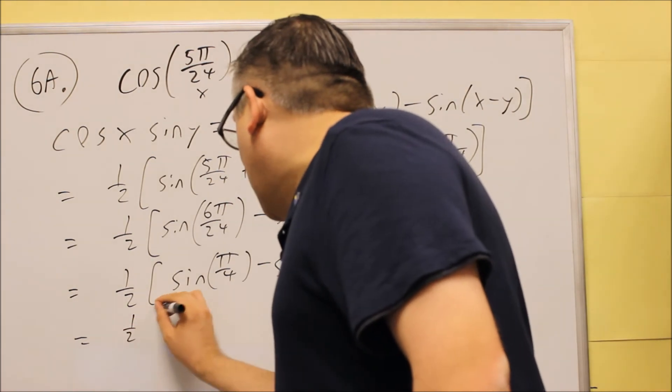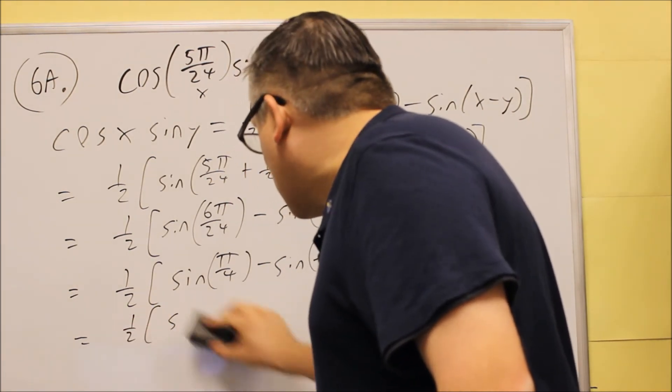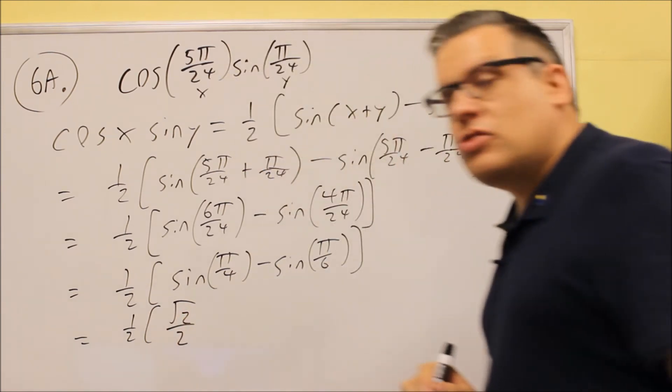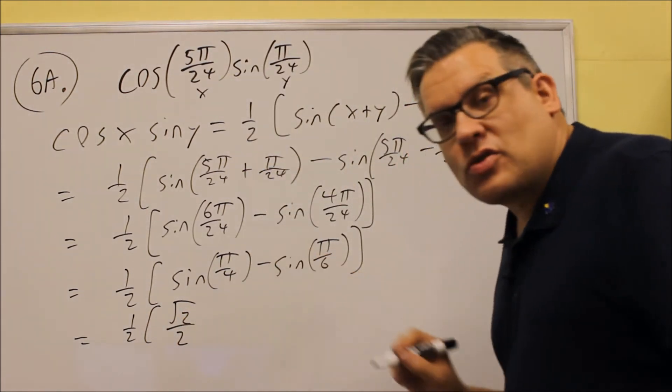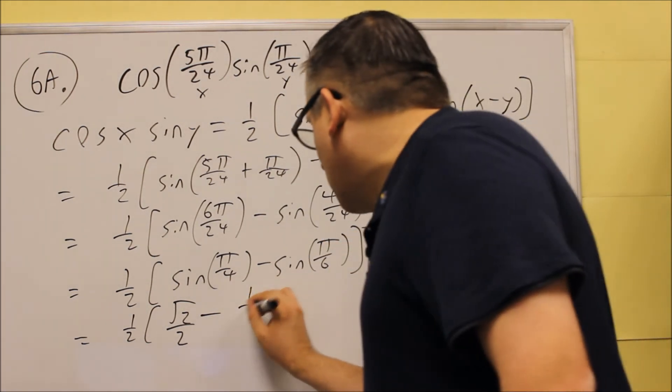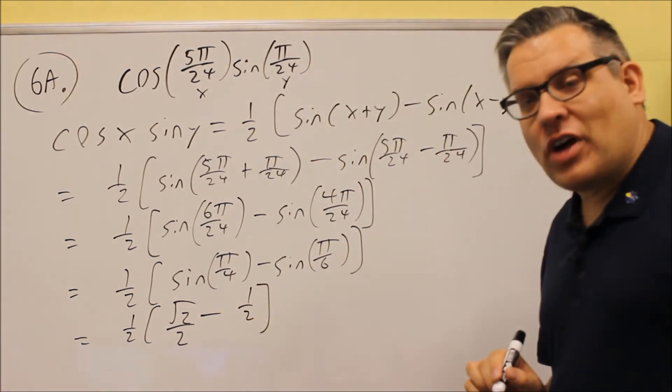When you do that, you get one-half, and this is going to be sine of π over 4, the whole thing gets replaced with square root of 2 over 2 is the value from the unit circle. This next one is you have π over 6, and that's going to be one-half is the value.